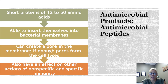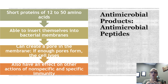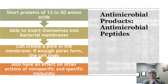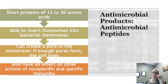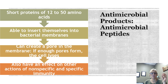The body also produces antimicrobial peptides — short proteins of 20 to 50 amino acids. Defensins can insert themselves into bacterial membranes, creating pores. If enough pores form, the cell will lyse — you poke enough holes in it, it's going to rupture. These peptides also have effects on other actions of nonspecific and specific immunity, and are effective against large groups of microorganisms. Researchers are actively looking at antimicrobial peptides for potential as therapeutic drugs.